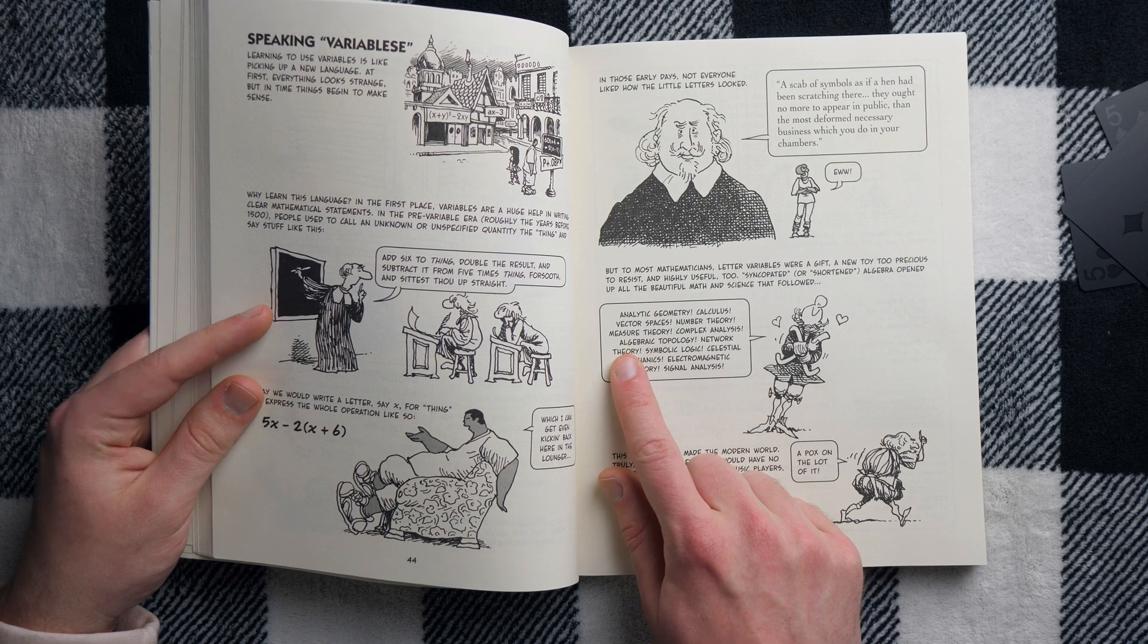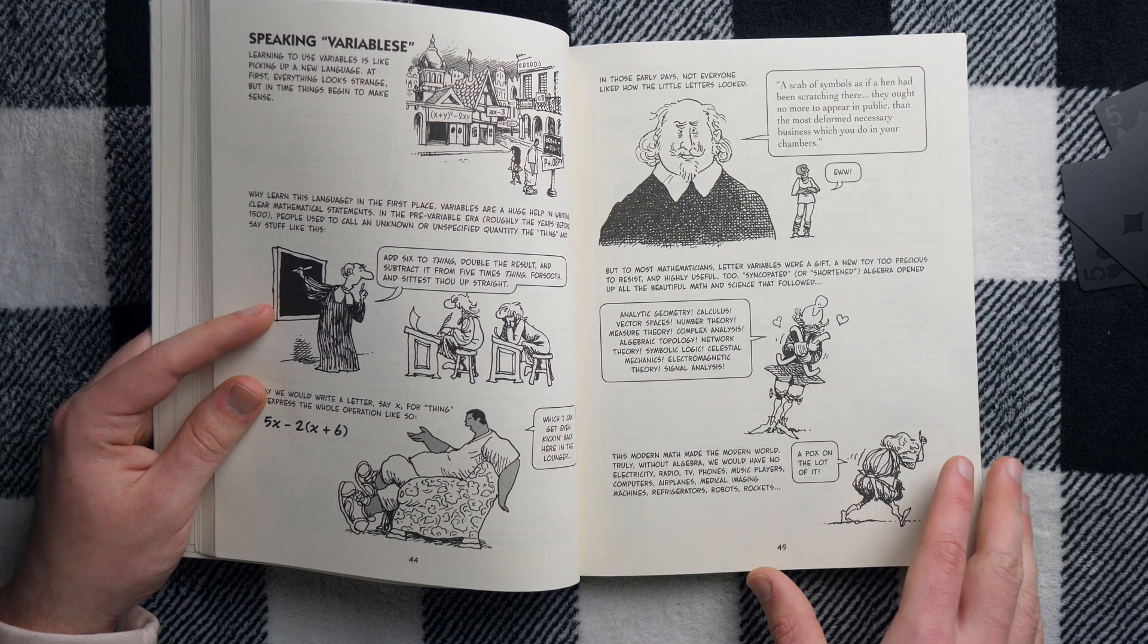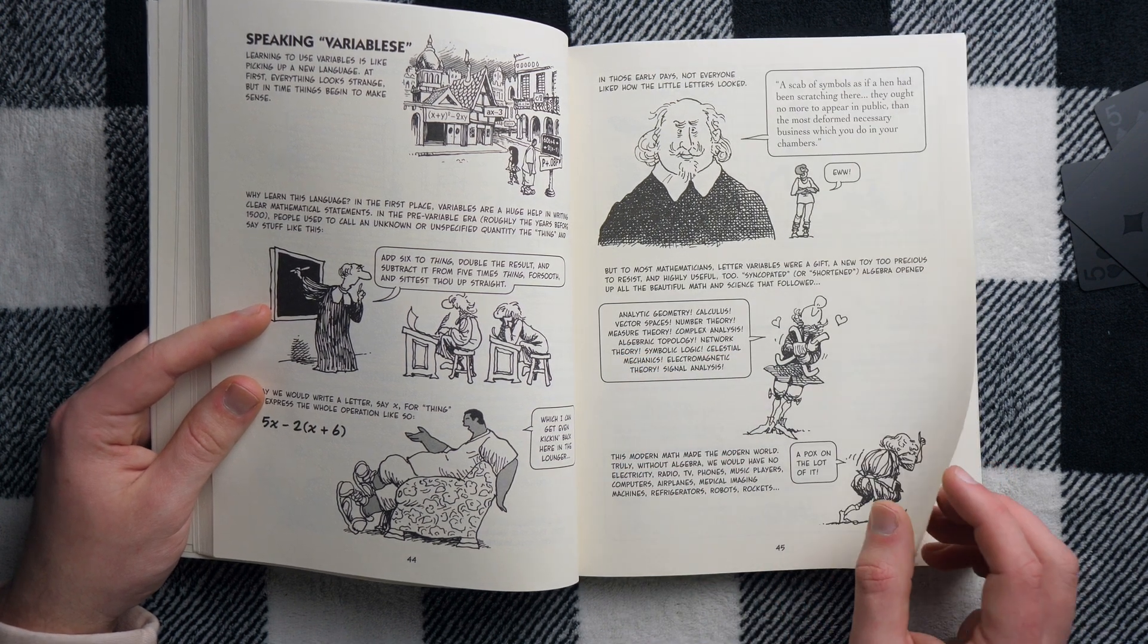I don't know if this is a real quote from somebody, but it very well could be. I've read real quotes of mathematicians that oppose new developments that read very much like this. It's pretty funny. But what do you get? You embrace the variables and you get all this wonderful stuff. Analytic geometry, calculus, vector spaces, complex analysis, algebraic topology. It's so wonderful.